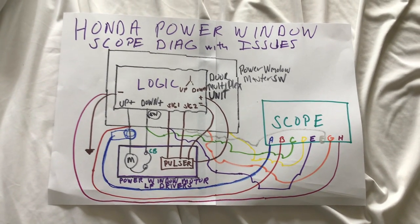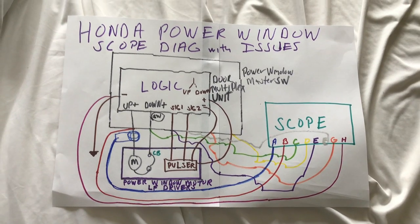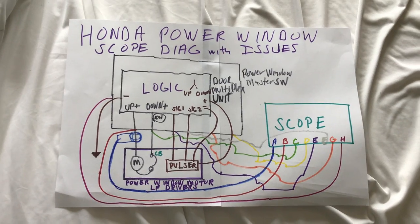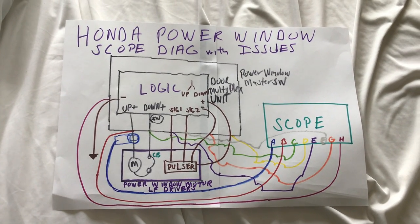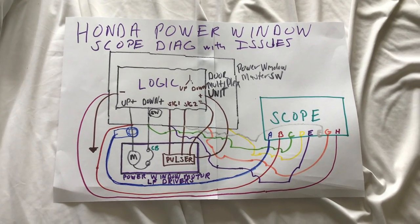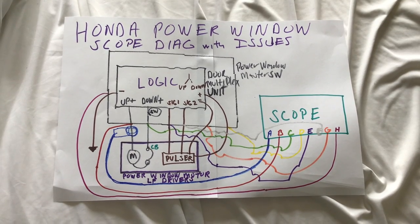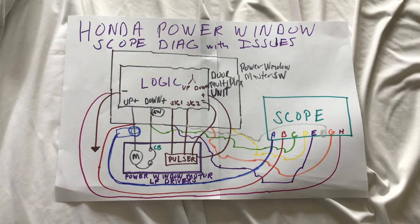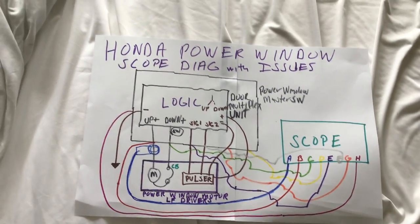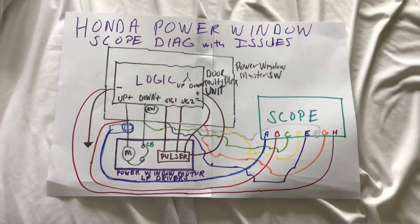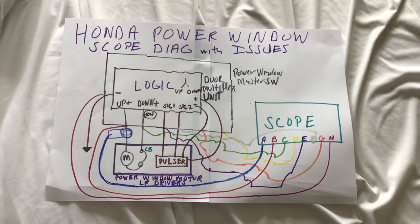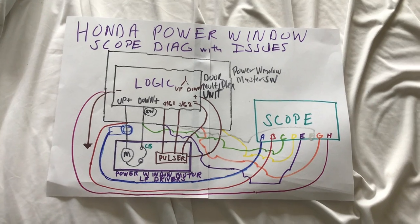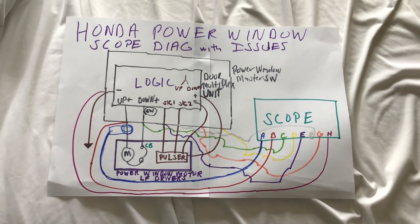Everything worked for a while until I started to hear some ticking when the window was closed. The window was being activated when it shouldn't have been, and after a while it pretty much burned out that power window motor. I called Rock Auto, they warrantied it, sent me another one, and I put it in.